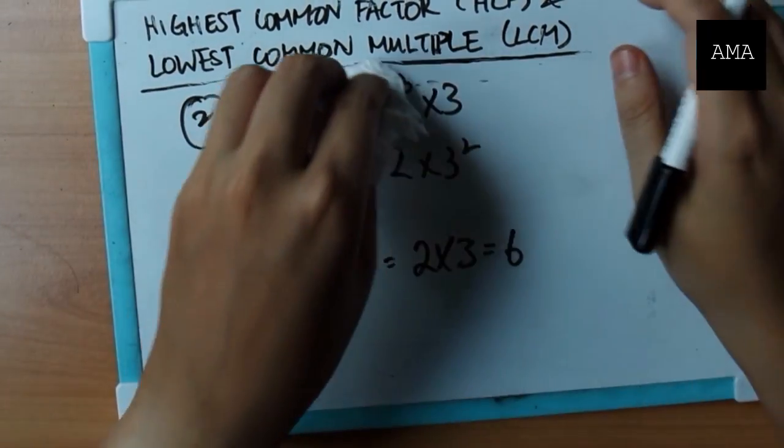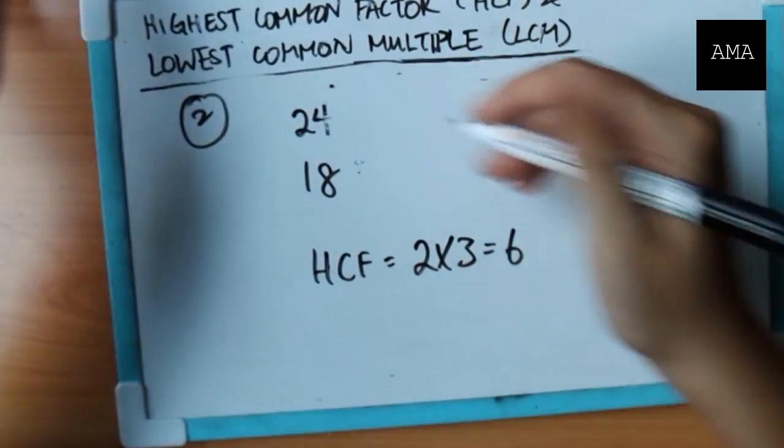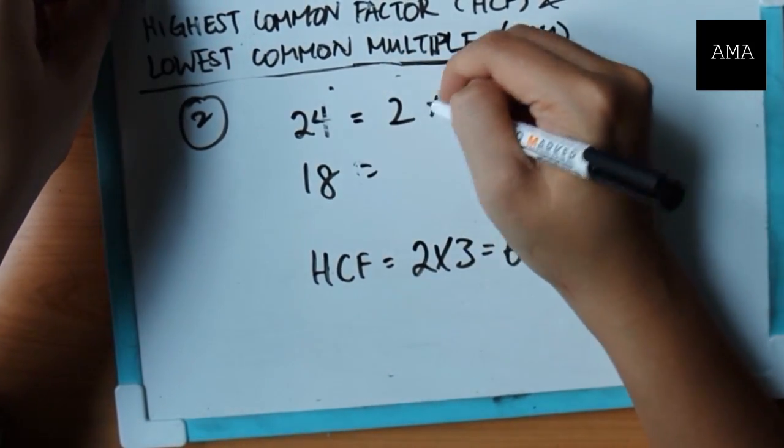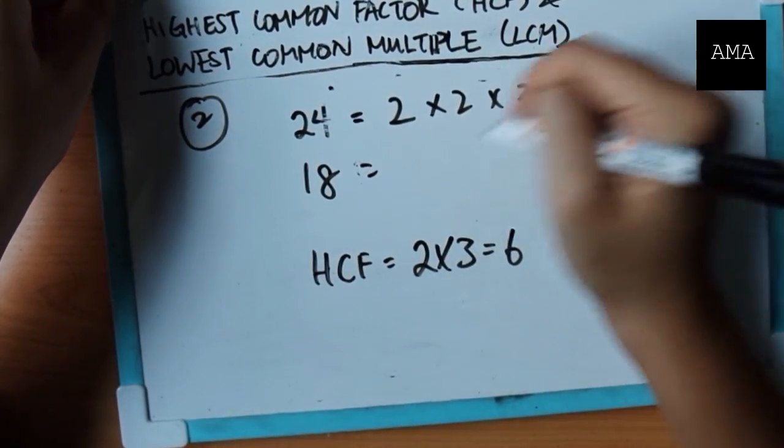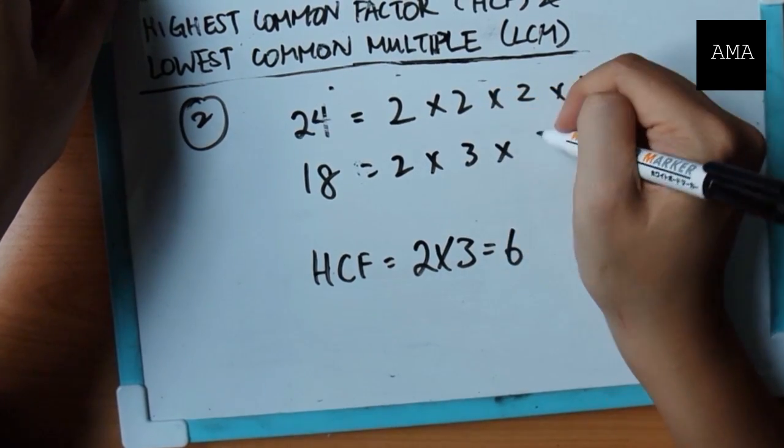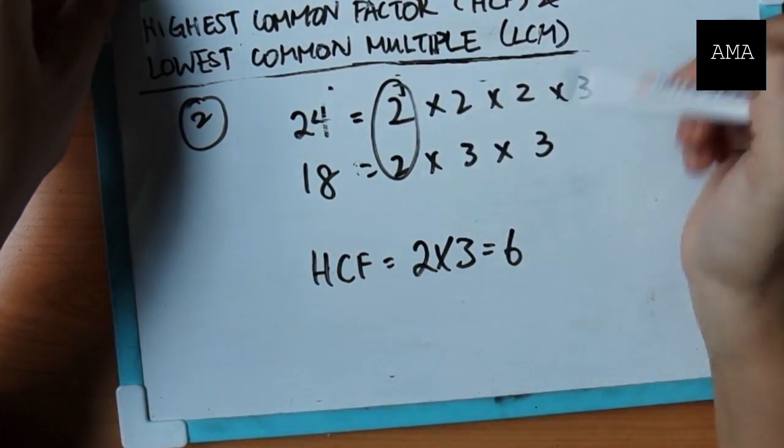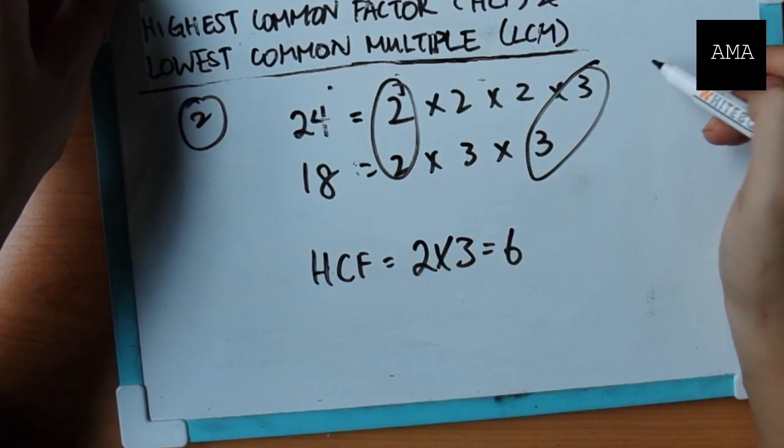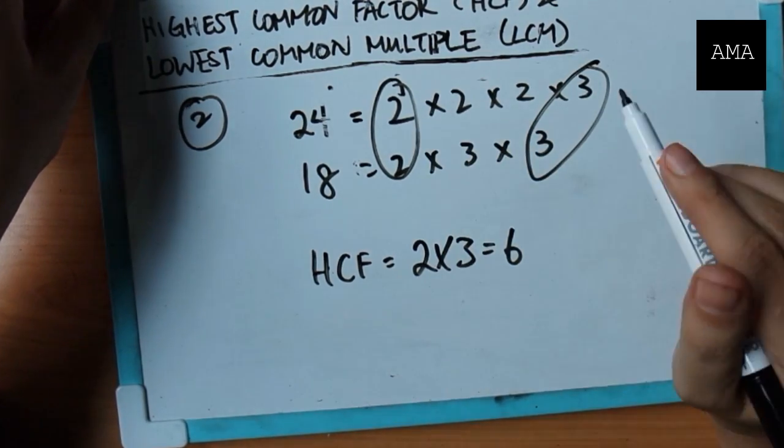Okay? I will express this out individually so you get a clearer idea. It's 2 times 2 times 2 times 3. This is 2 times 3 times 3. Can you see I have this? 1, 2, 1, 2. 1, 3, 1, 3. So the answer is 2 times 3.